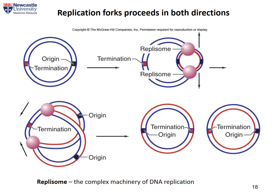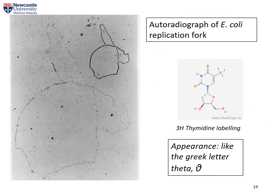Once replication begins, the replication forks will proceed in both directions and extend as new DNA molecules are synthesized. Eventually they stop at the termination point, forming two daughter DNA molecules. You have one replication fork proceeding in one direction and a second replication fork proceeding in the other direction, with the termination point somewhere in between.